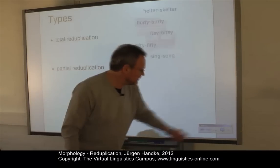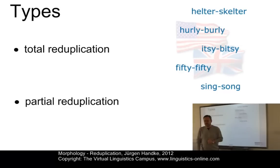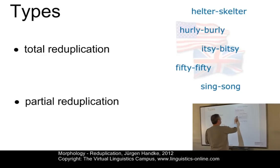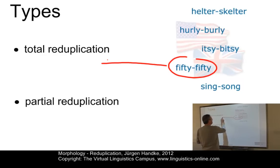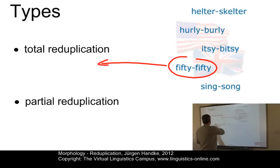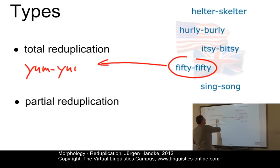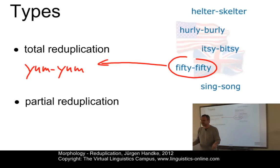Let's start with the classification. There are two main types of reduplication. On the one hand, we can have total reduplication, like in 50-50. Or in present-day English, we have things like yum-yum, which is an interjection that expresses some sort of pleasure from eating or the prospect of eating.